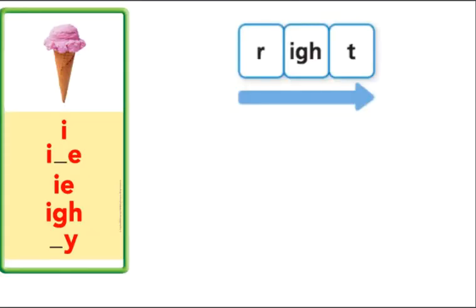You have seen this spelling card before with a picture of the ice cream cone. And when we say ice cream, we can hear I as the first sound in the beginning of the word I, and that sound is a long vowel sound, I. That vowel sound is long I, ice cream.